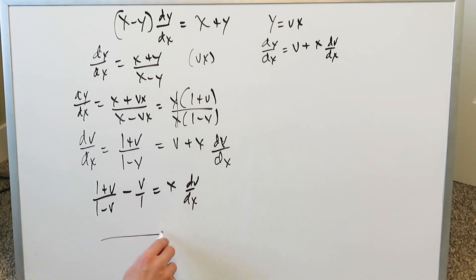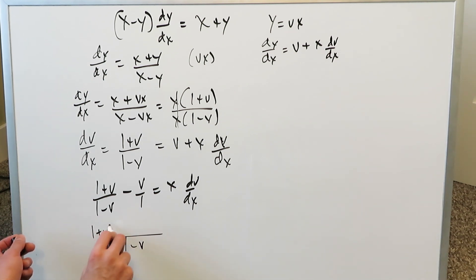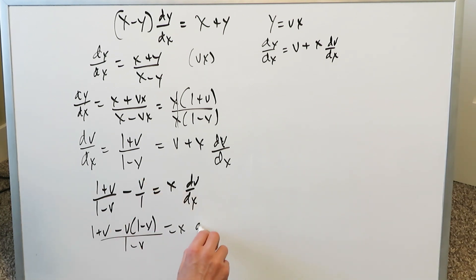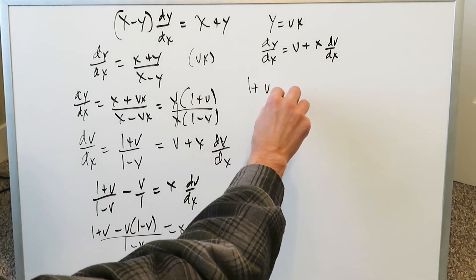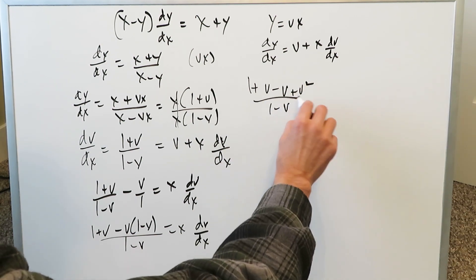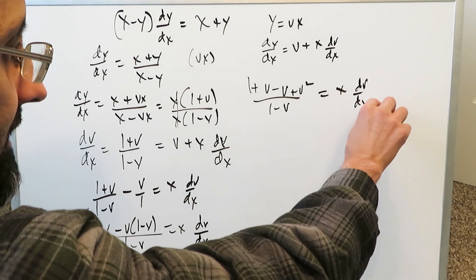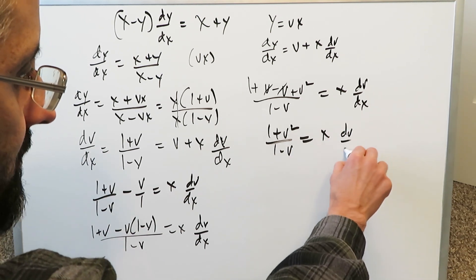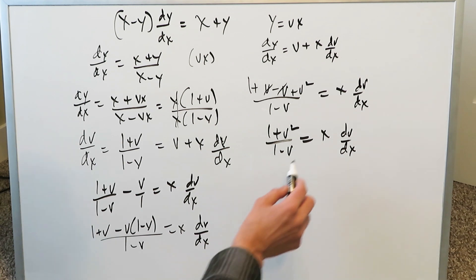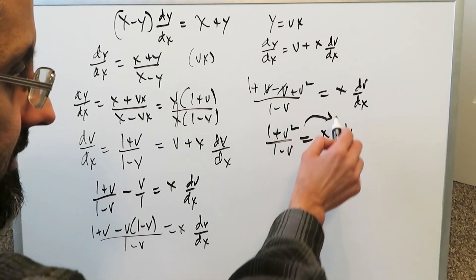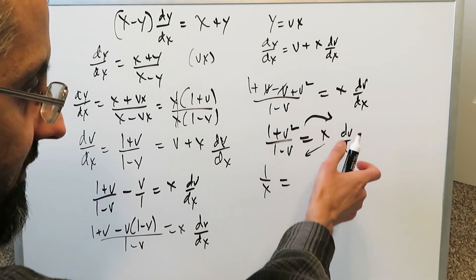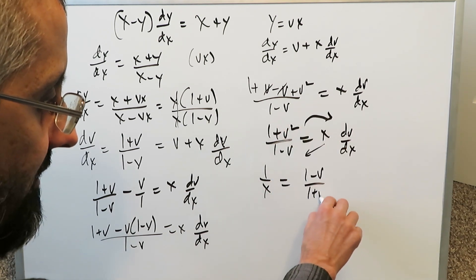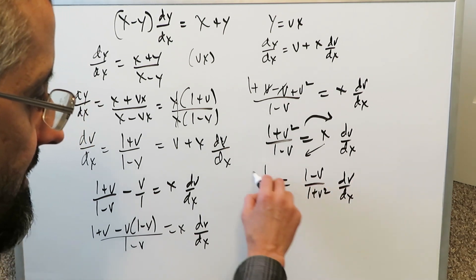Substituting gives dy over dx equals x plus vx divided by x minus vx. Isolating x gives 1 plus v over x times 1 minus v — the x's cancel, leaving dy over dx equals 1 plus v divided by 1 minus v. Setting equal to v plus x dv over dx and moving v to the other side with common denominator 1 minus v: you have 1 plus v minus v times (1 minus v) all over (1 minus v) equals x dv over dx. Opening this up: 1 plus v minus v plus v squared over 1 minus v equals x dv over dx. The v's cancel, giving 1 plus v squared over 1 minus v equals x dv over dx, and now you can separate the variables.